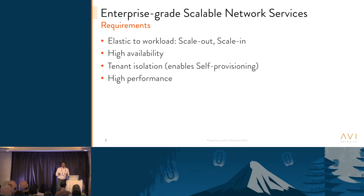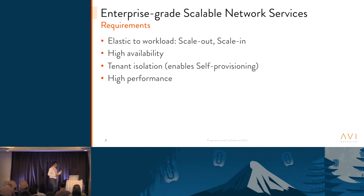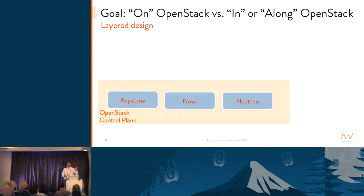We're talking about a high-performance network service. I'll spend some time on what application we are building to give you an idea of what OpenStack APIs you would need to build such a network service. The first goal we had was to build it on top of OpenStack, instead of in OpenStack or alongside OpenStack.